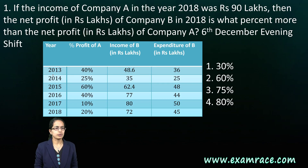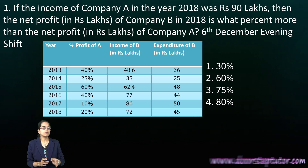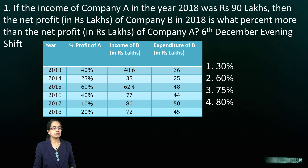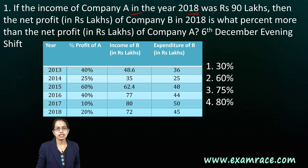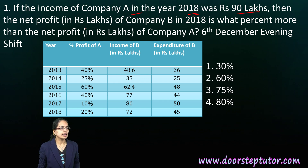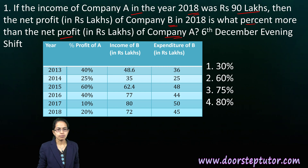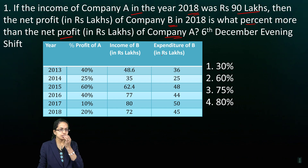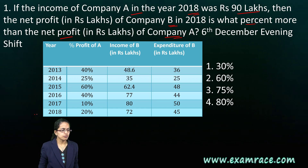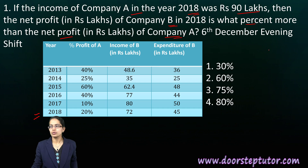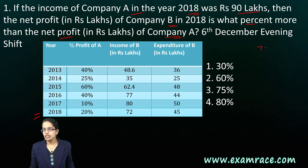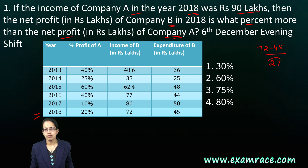The first question says: if the income of company A in 2018 was 90 lakhs, then the net profit of company B was what percent more than the net profit of company A? To find the net profit of company B for 2018, we do 72 minus 45, which gives a net profit of 27 lakhs for company B.